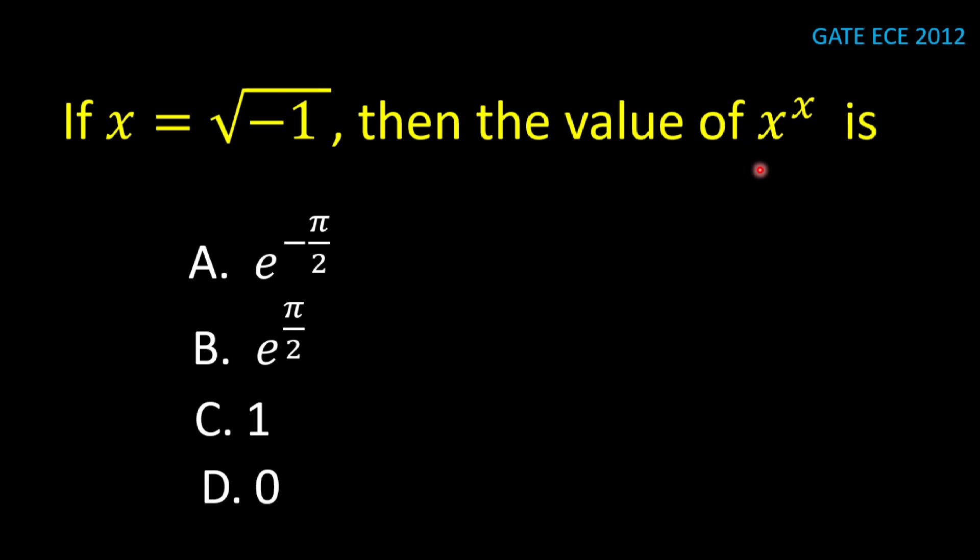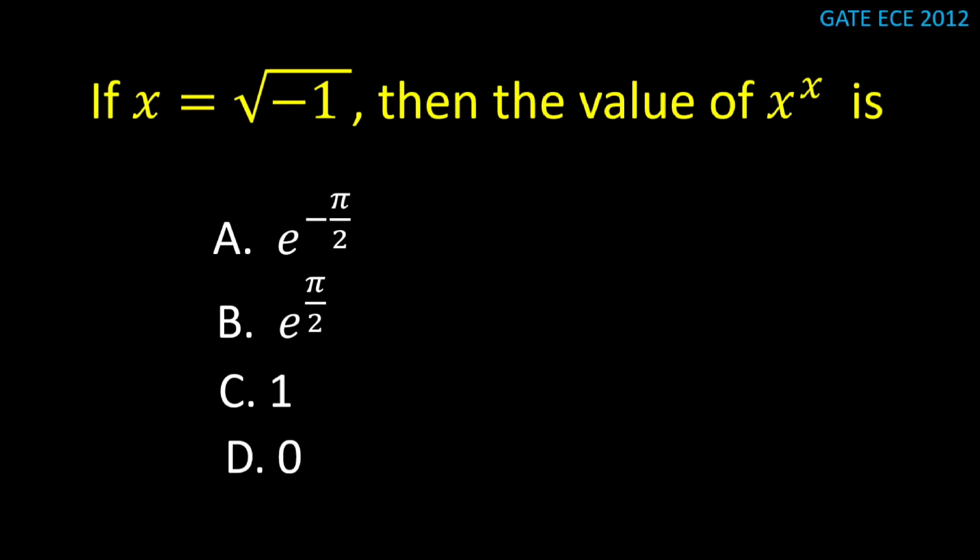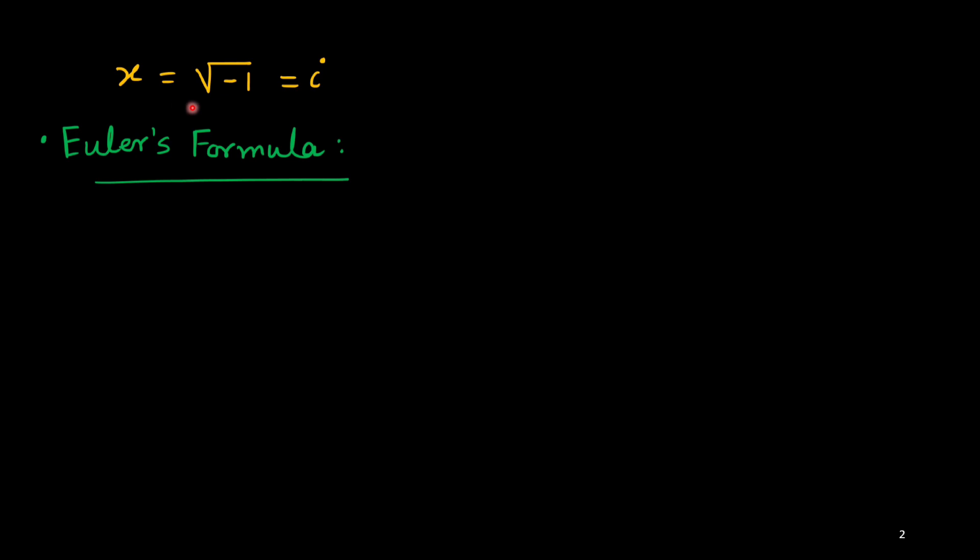x is given as square root of minus 1. It is an imaginary number. Generally, we use the symbol small i for this complex number. We will start with Euler's formula.